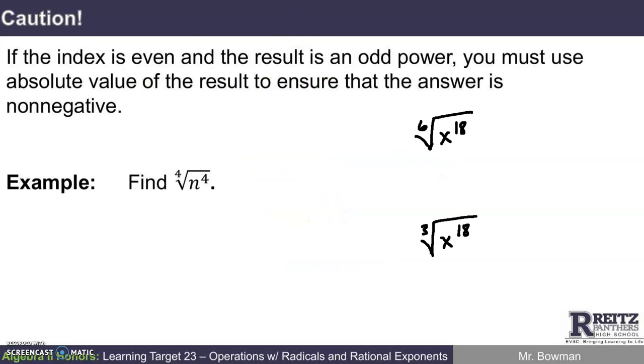Before we try simplifying some nth roots, here's a word of caution. If the index is even, and the result is an odd power, you must use absolute value of the result to ensure that the answer is non-negative. We'll talk about this here in this slide on the video. I'm sure you'll have questions about this when you get to class, and that's okay.